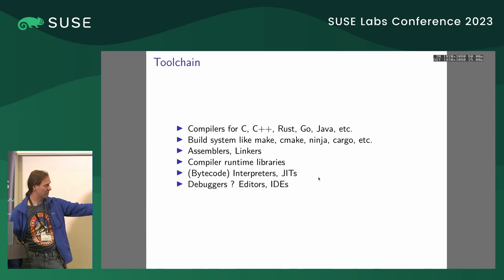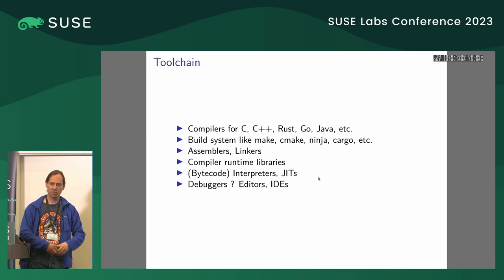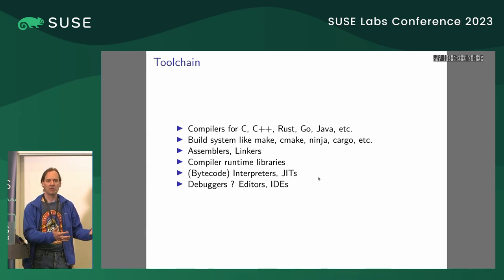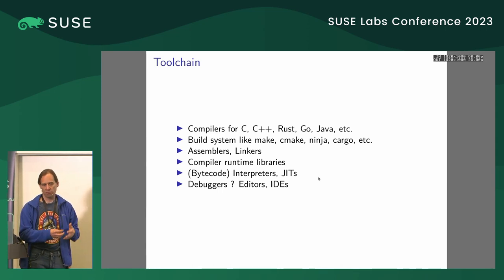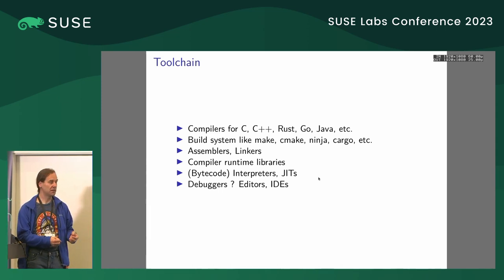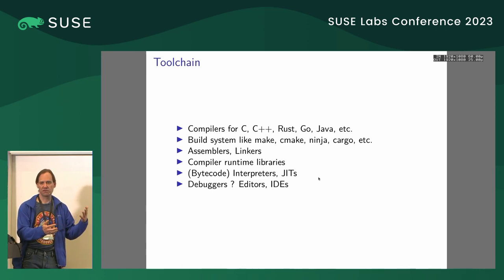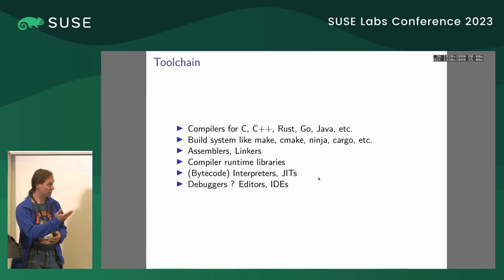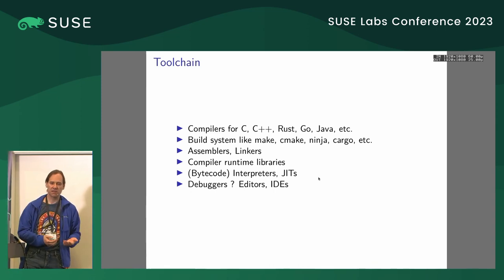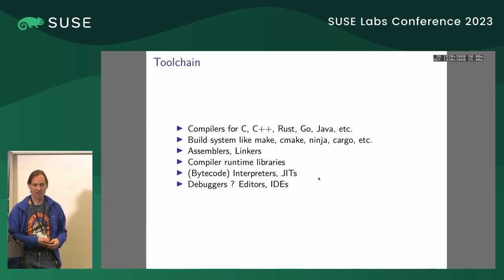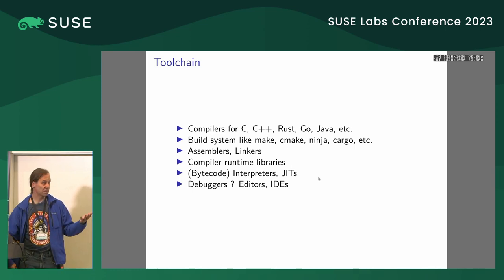A very important part of the toolchain is actually the runtime libraries. If you build something and then run it, it usually relies on some runtime libraries. Part of the runtime library in Linux is the C library, which is used by almost all languages. But there are also language-specific runtimes, like the C++ runtime of GCC, or the Fortran runtime library when building and running a Fortran program.